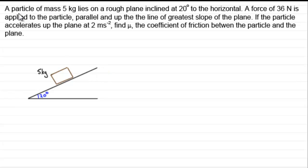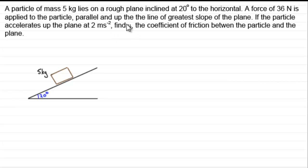So we've got this particle then, a particle of mass 5 kilograms, lying on a rough plane inclined at 20 degrees to the horizontal. There's a force of 36 newtons applied to this particle parallel up the line of greatest slope of the plane. If the particle accelerates up the plane at 2 meters per second per second, we've got to find mu, the coefficient of friction between the particle and the plane.